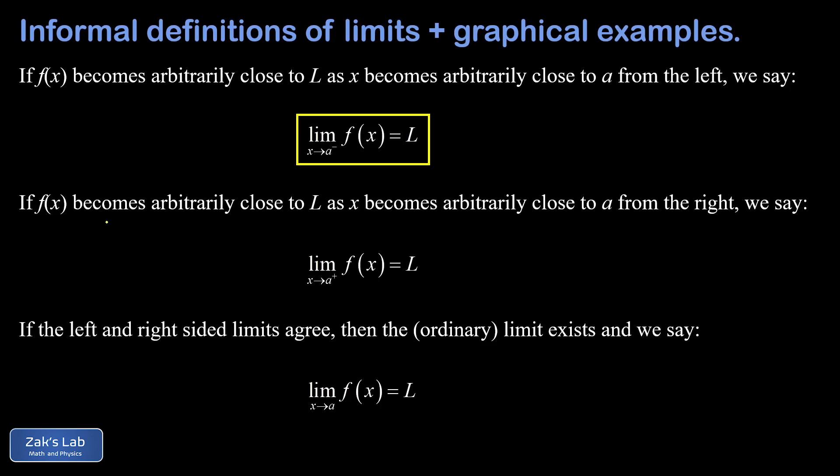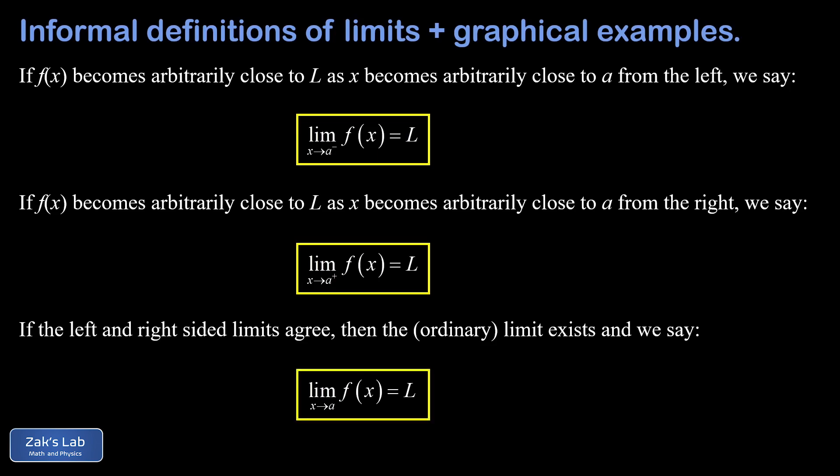For a right-sided limit: if f(x) becomes arbitrarily close to L as x becomes arbitrarily close to a from the right, we write the limit as x goes to a from the right (using a plus sign) of f(x) equals L. Finally, if the left and right-sided limits agree, the ordinary limit exists. This is an if-and-only-if statement — if the ordinary limit exists, we can conclude both one-sided limits exist and agree.